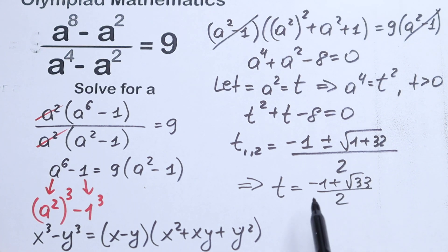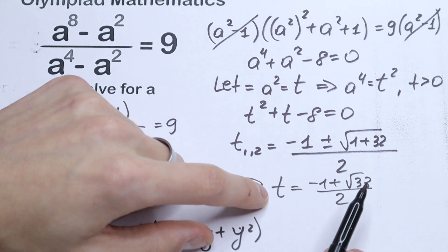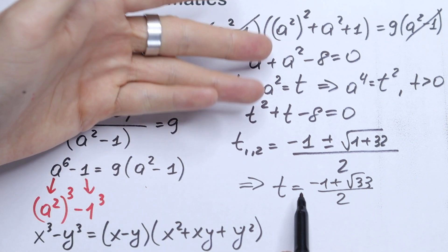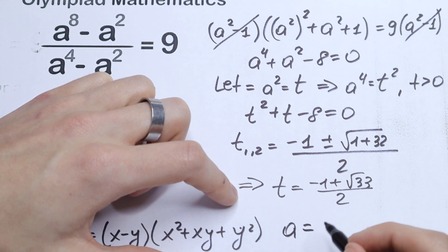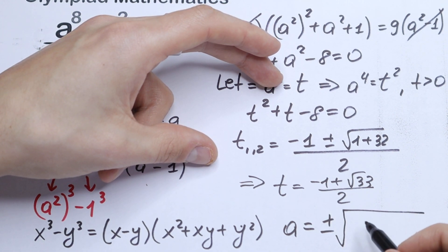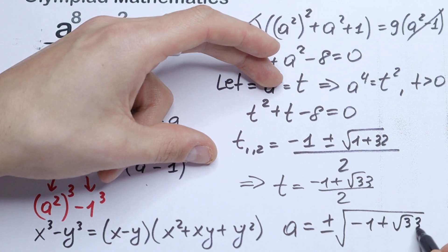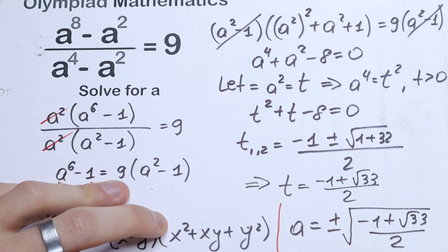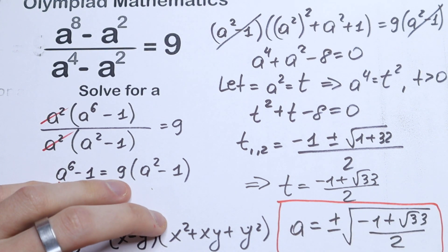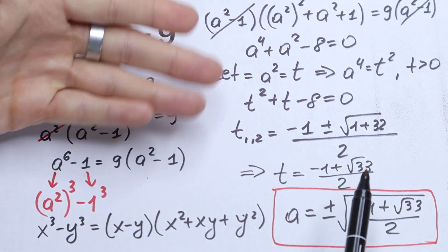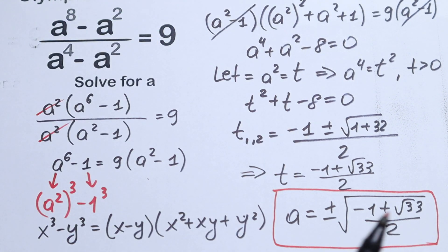Let's go back to our substitution: a squared equals t. We have t, but we need a, so we take the square root of both sides. Since we have a square, we put plus or minus. Our final answer is a equals plus or minus the square root of the quantity: minus 1 plus the square root of 33, all over 2. This is our answer. Of course there would be complex roots from rejecting the negative value, but this is our real number root — this is our a.